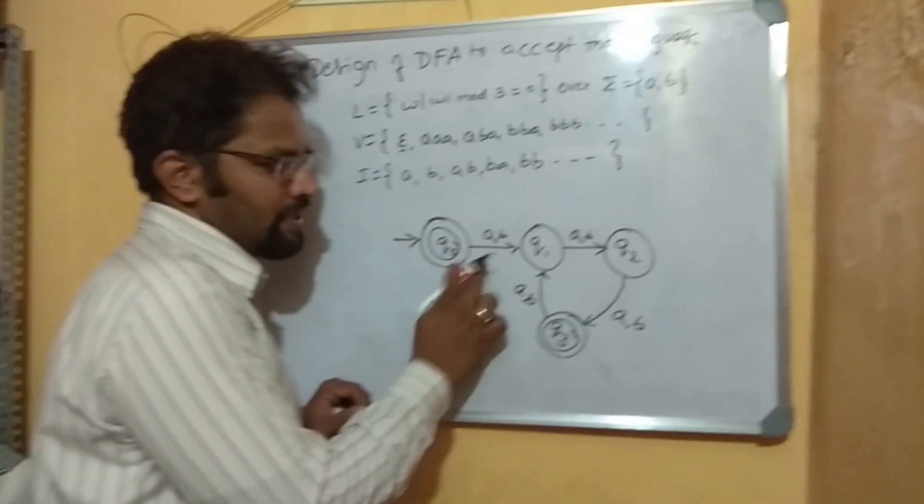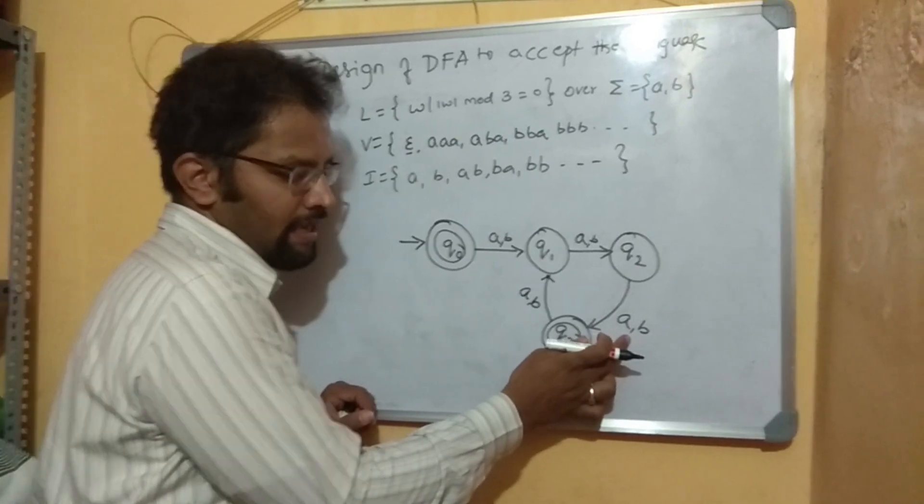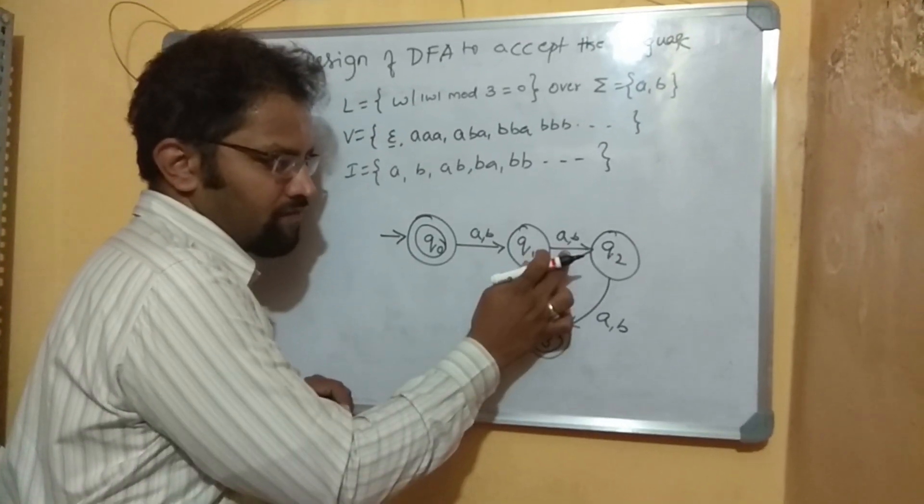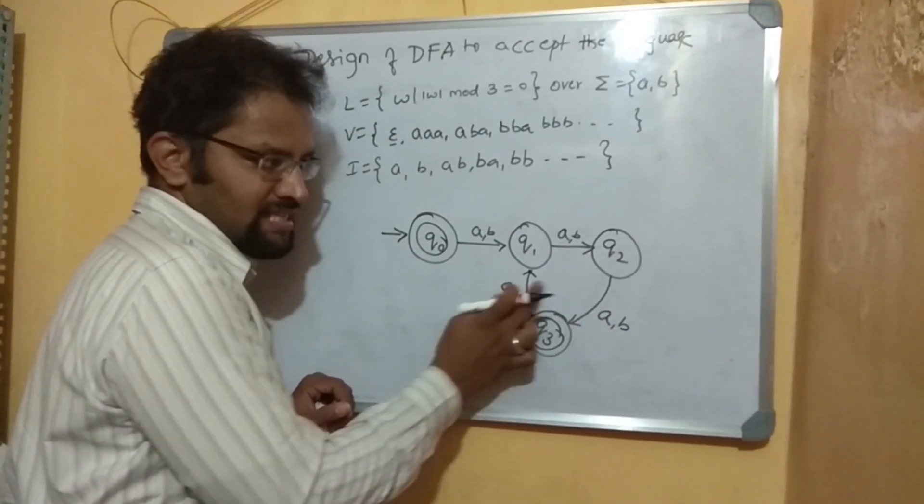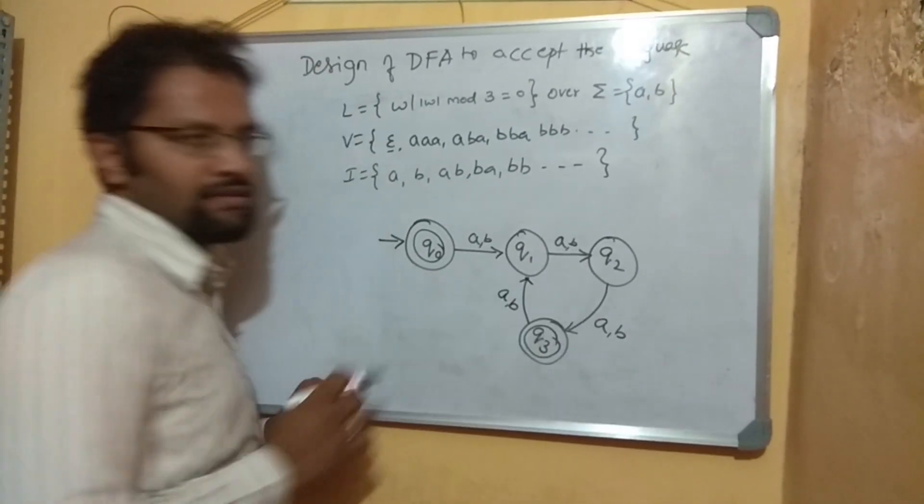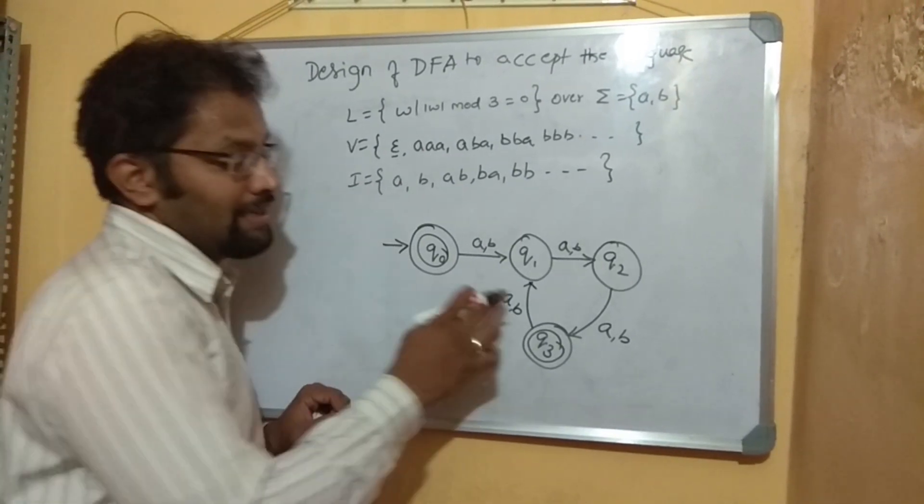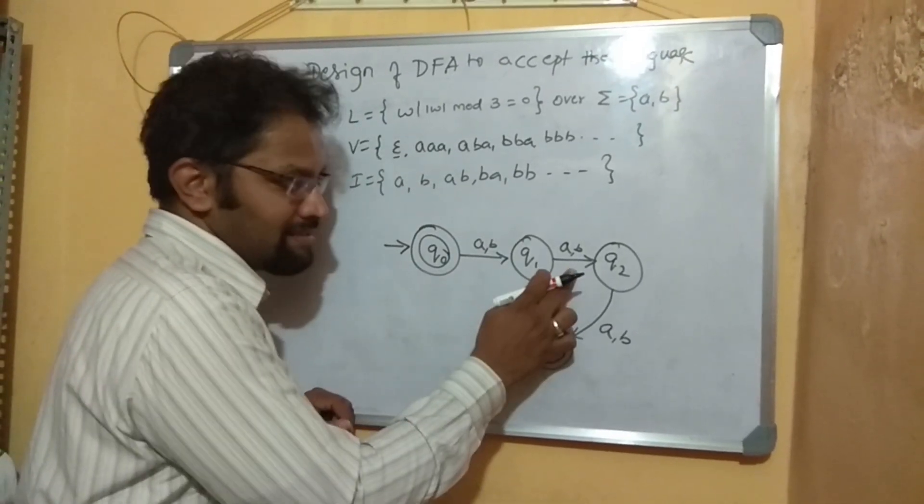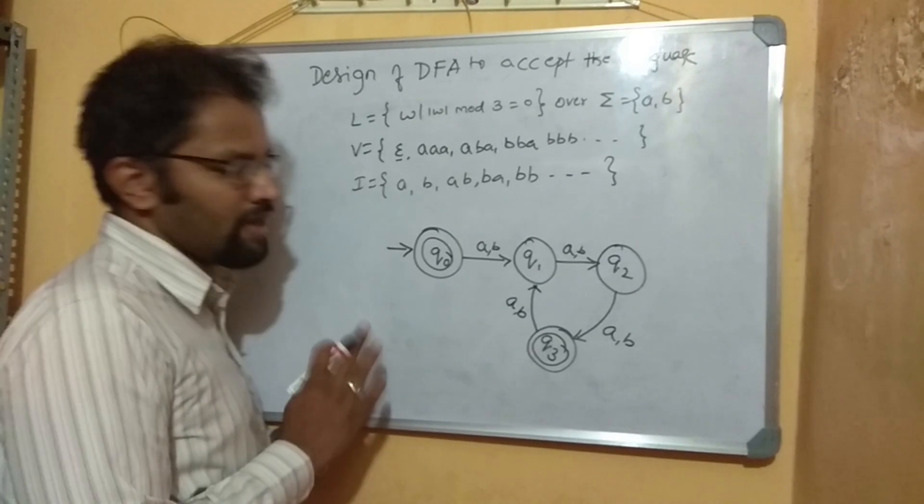Observe now. First A, second A, third A, fourth A, fifth A, sixth A is accepted. Seventh, eighth, ninth is accepted. Tenth is rejected. Eleventh is rejected. Twelfth is accepted. This is what happens.